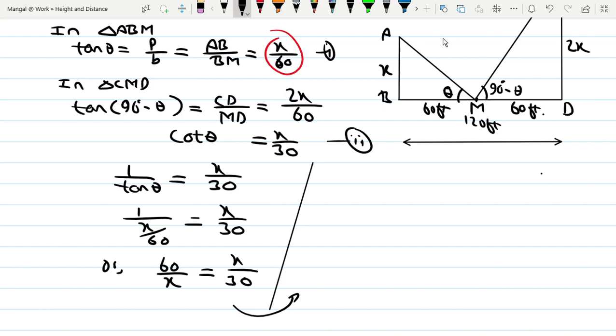Cross multiplying: x times x equals 1800, so x squared equals 1800.